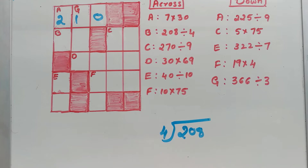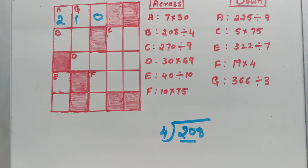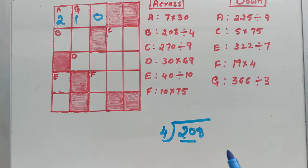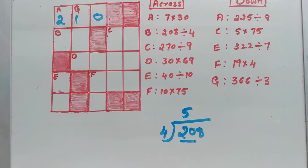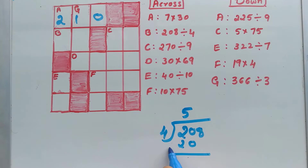20 is greater than 4, so now you can divide. 4 times 1 is 4, 4 times 2 is 8, 4 times 3 is 12, 4 times 4 is 16, 4 times 5 is 20. So we use 5. Next step: subtraction — 20 minus 20 is 0.